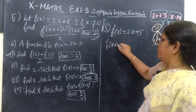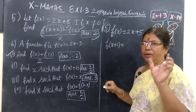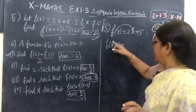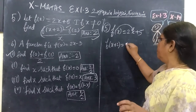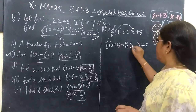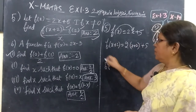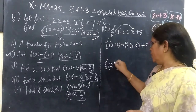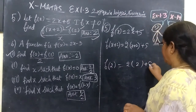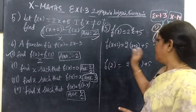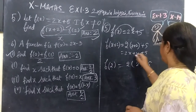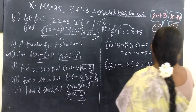To find f of x plus 2, you substitute x plus 2 in place of x in the bracket. So wherever x appears, you write x plus 2. And for f of 2, you write 2 in the bracket. So f of x plus 2 gives 2 times (x plus 2) plus 5, which equals 2x plus 4 plus 5, equal to 2x plus 9.